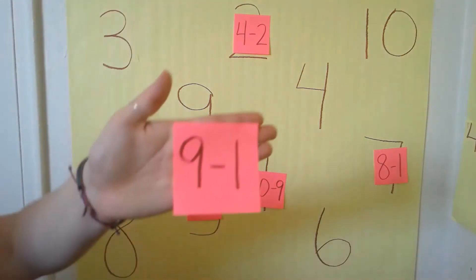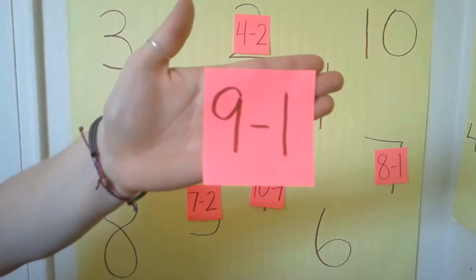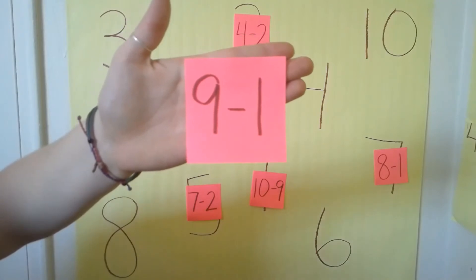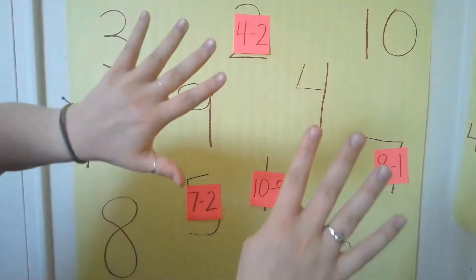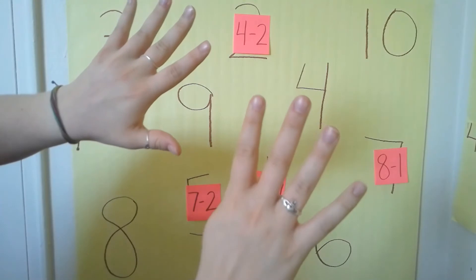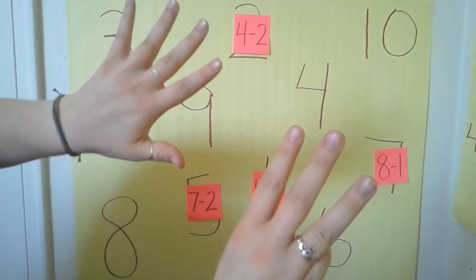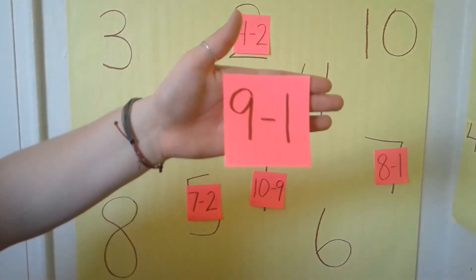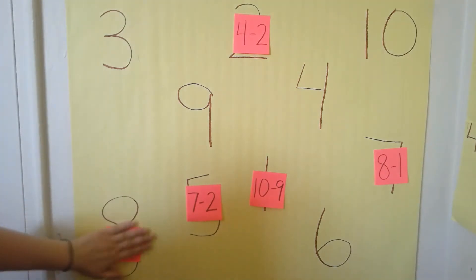Our next number sentence is — what does it say? Nine minus one. What's nine minus one? Let's check your answer. We need to hold up nine fingers. How many fingers are we taking away? One. So take away one finger. How many are left? Eight. So nine minus one equals eight. Can you find the number eight? Right down here at the bottom on the left.